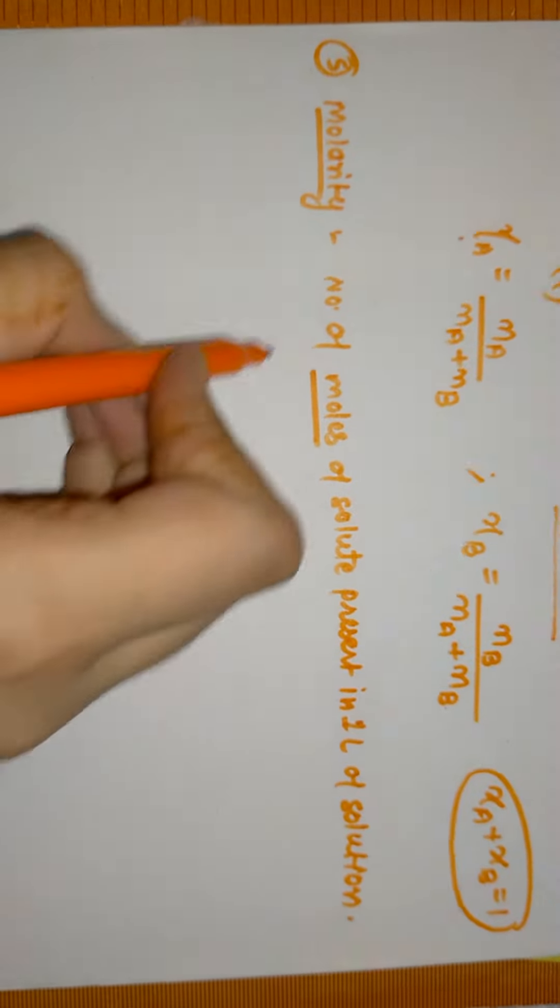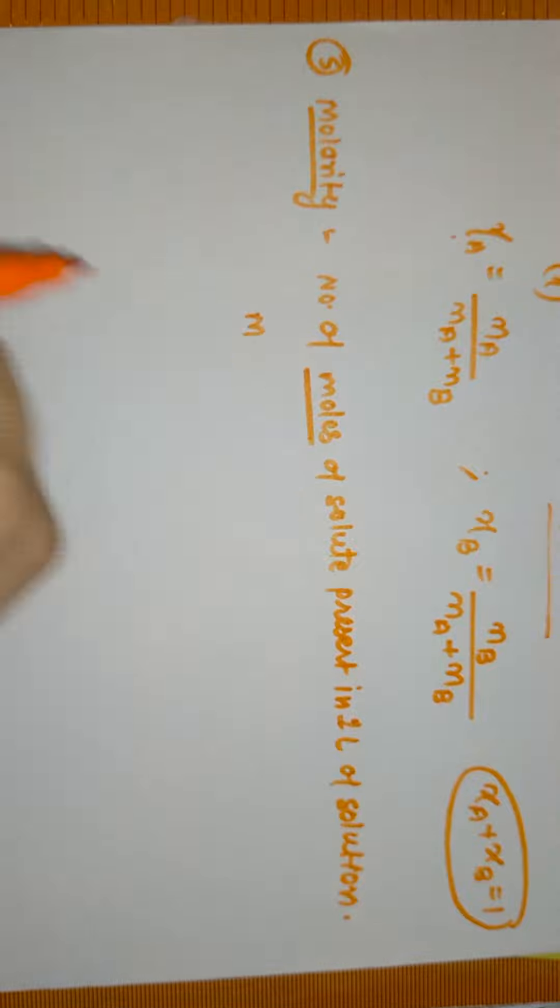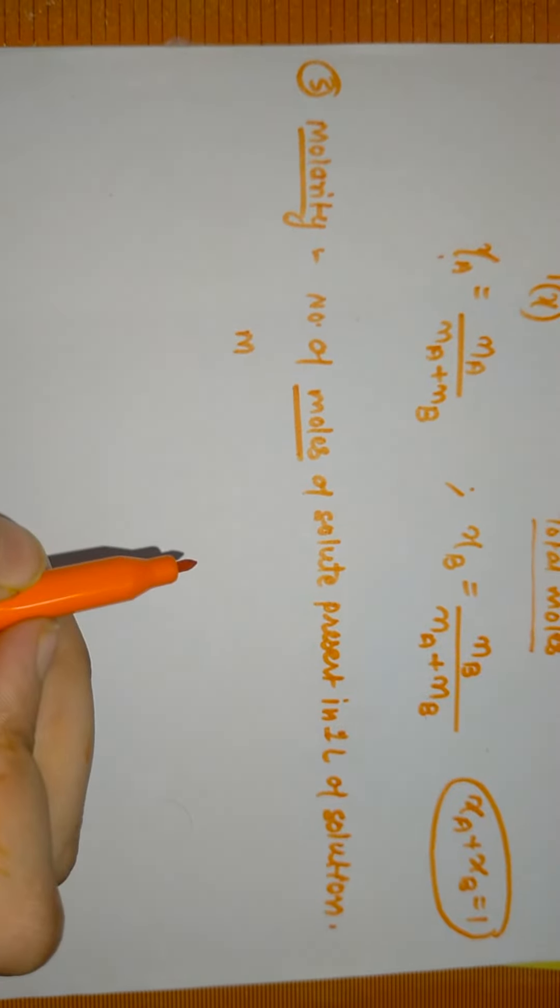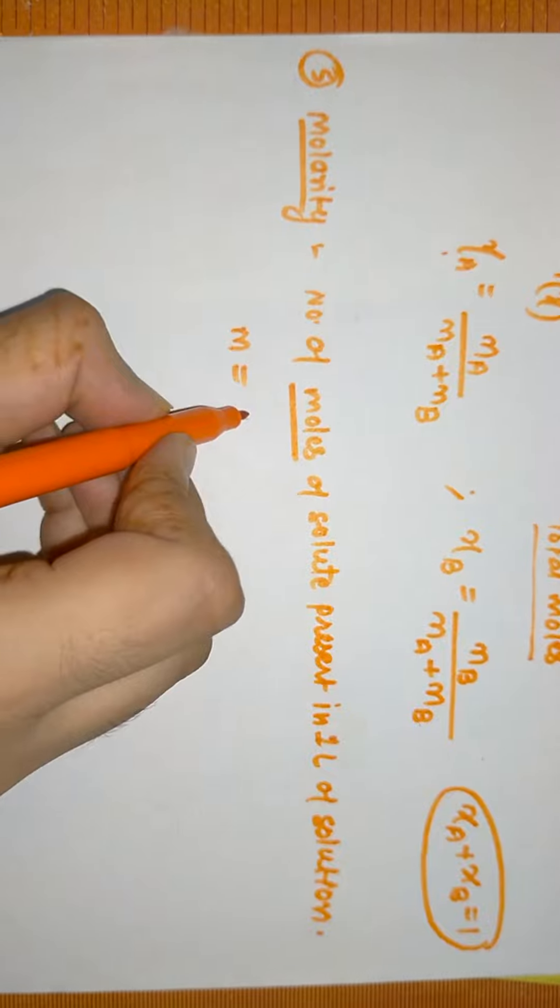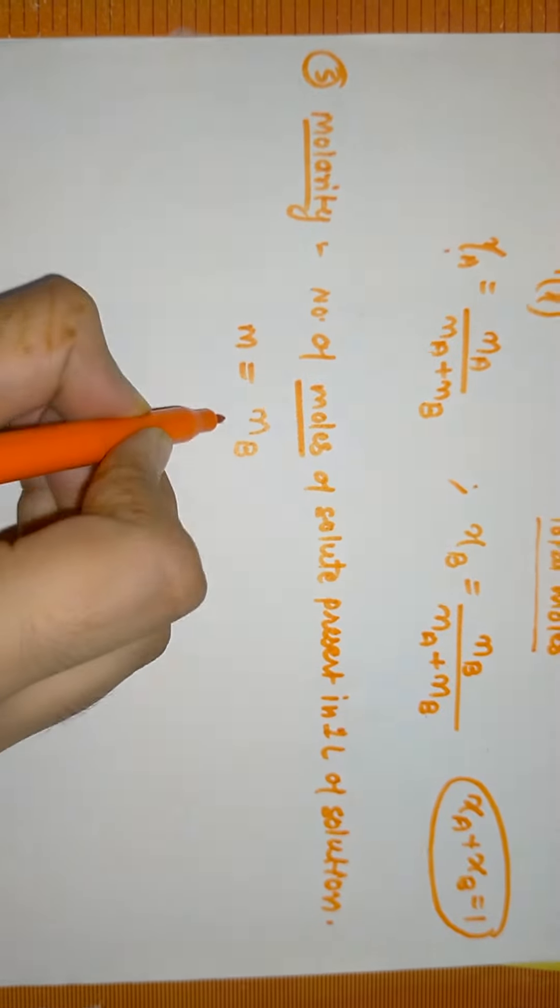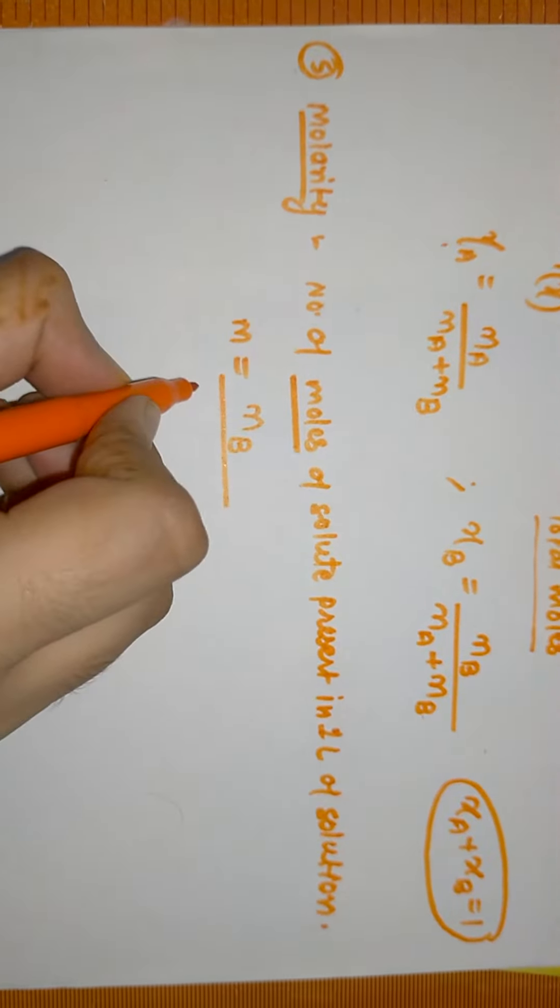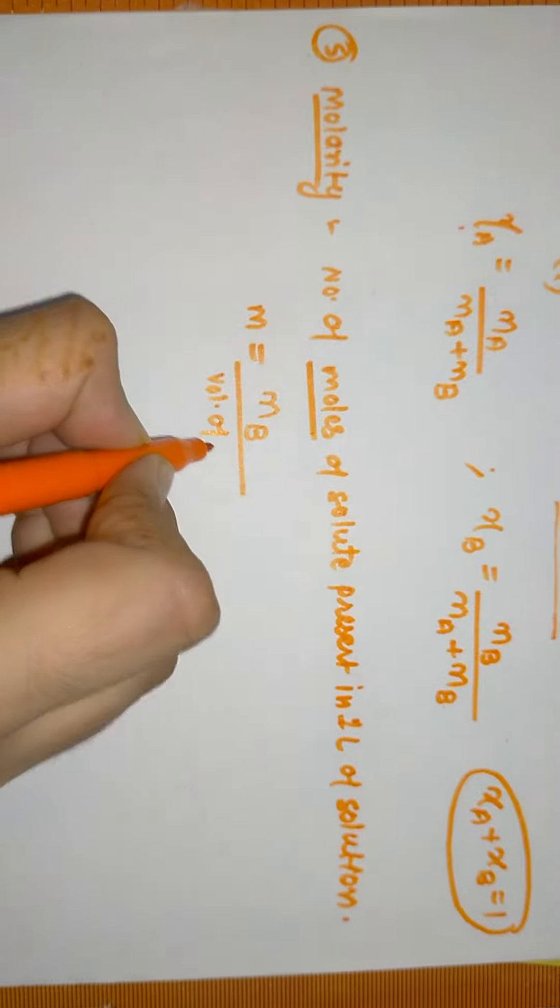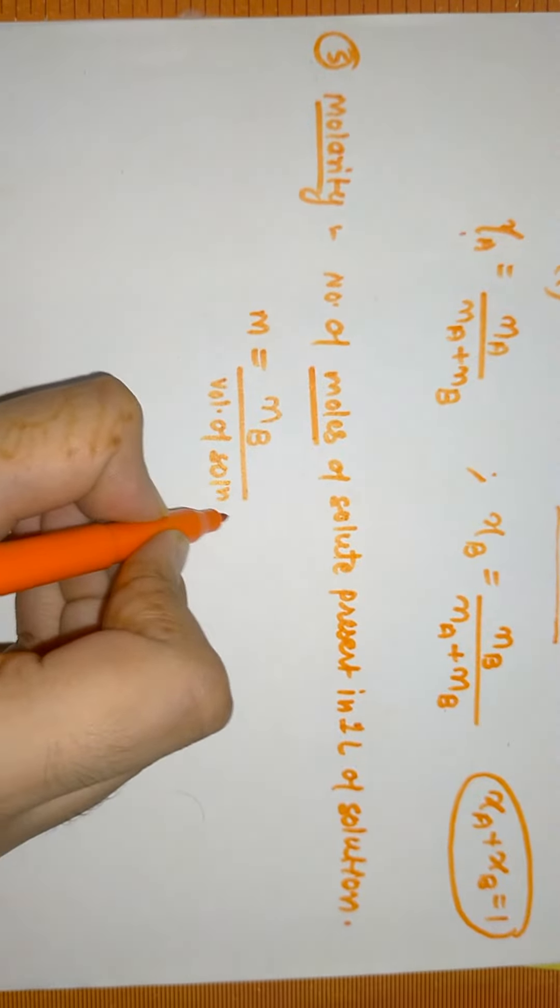Let's write the formula. We denote molarity with capital M. So, molarity equals number of moles of solute divided by volume of solution in liters.